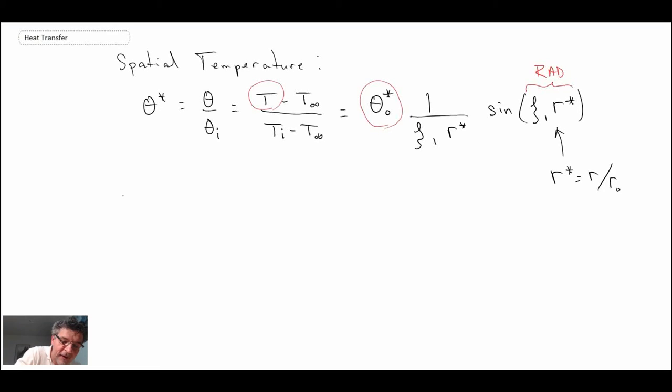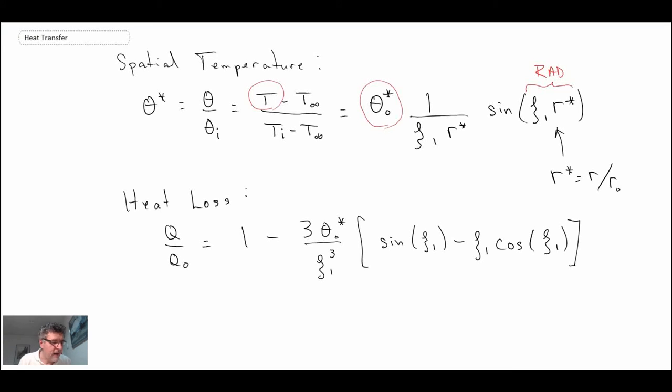And then finally heat loss. How do you calculate heat loss from this sphere? That's a little bit more complex than we've seen for the slab and the cylinder. And q naught—that is just like we had for all the other ones—total amount of energy assuming that your sphere goes all the way to T infinity with time. So that is heat loss, spatial temperature, centerline temperature.